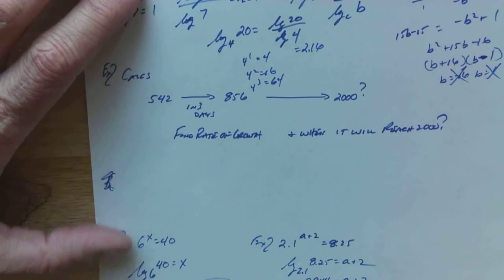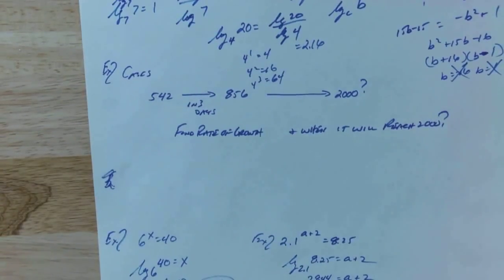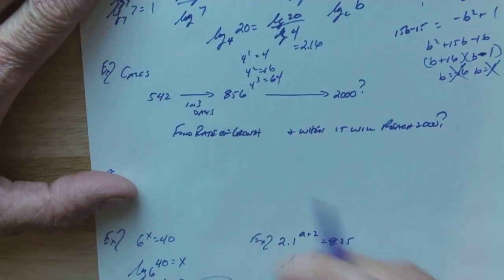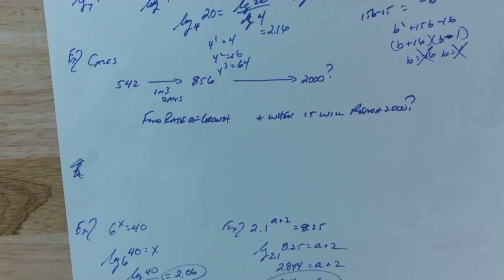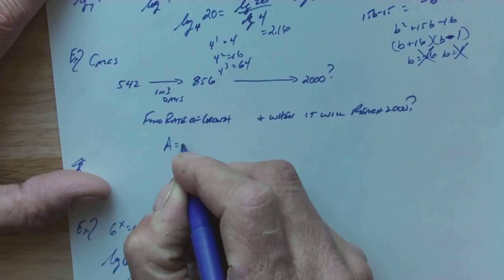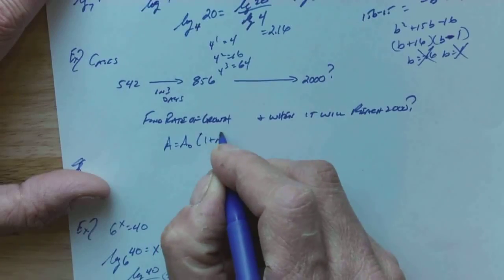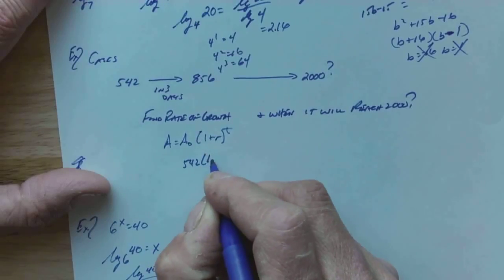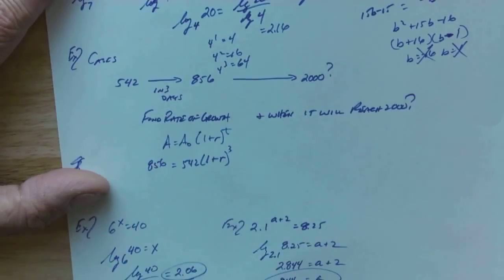Let's do something a little bit more scientific. So, let's say I've got a number of cases. Maybe this is COVID-19. Maybe it's flu. Maybe it's whatever. Start with 542, and in three days, I end up with 856. Now, this one is actually somewhat logarithmic, somewhat not logarithmic. This first part here, let's think about it. My amount is amount zero times 1 plus r raised to the t. That's my formula. What do I have? I've got my initial amount. I don't know my rate, but I know that in three days, I'm going to end up with 856.